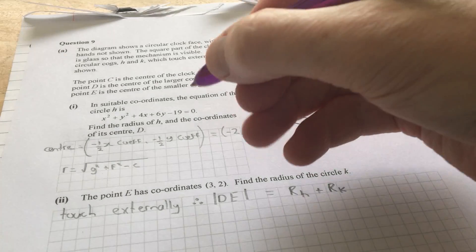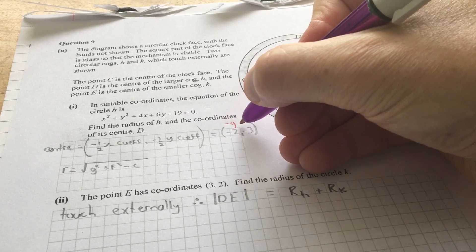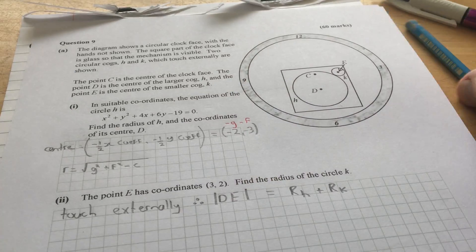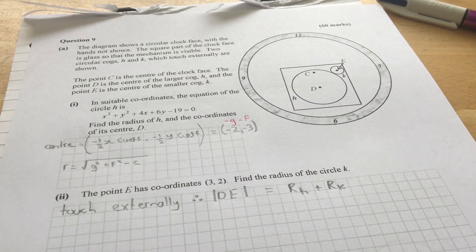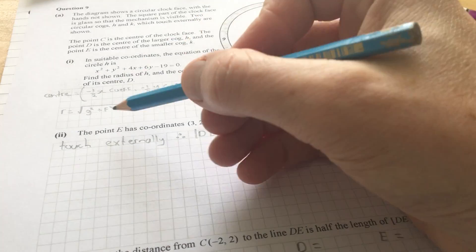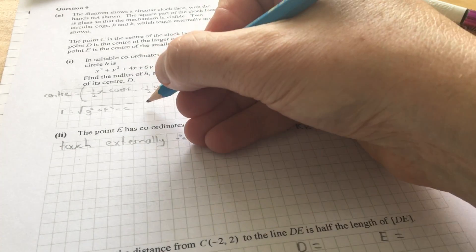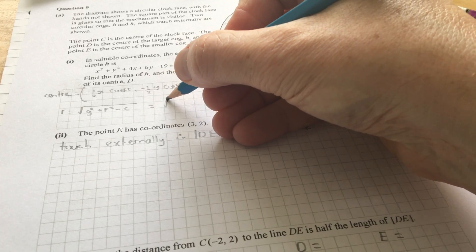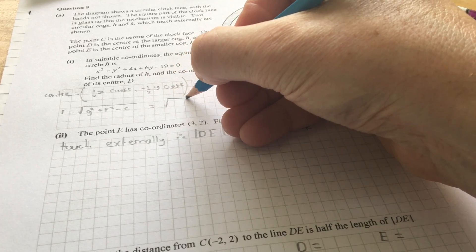Now, the center is also known as minus g minus f, because that's useful for the next part when we're asked to find the radius. The radius is found using this formula. So, g, f, and c.